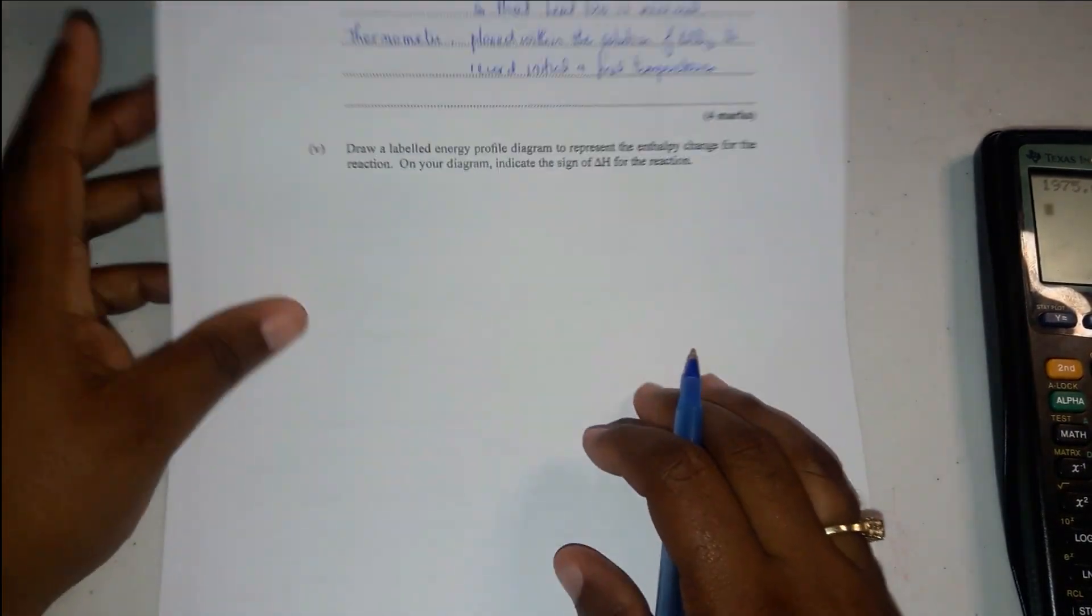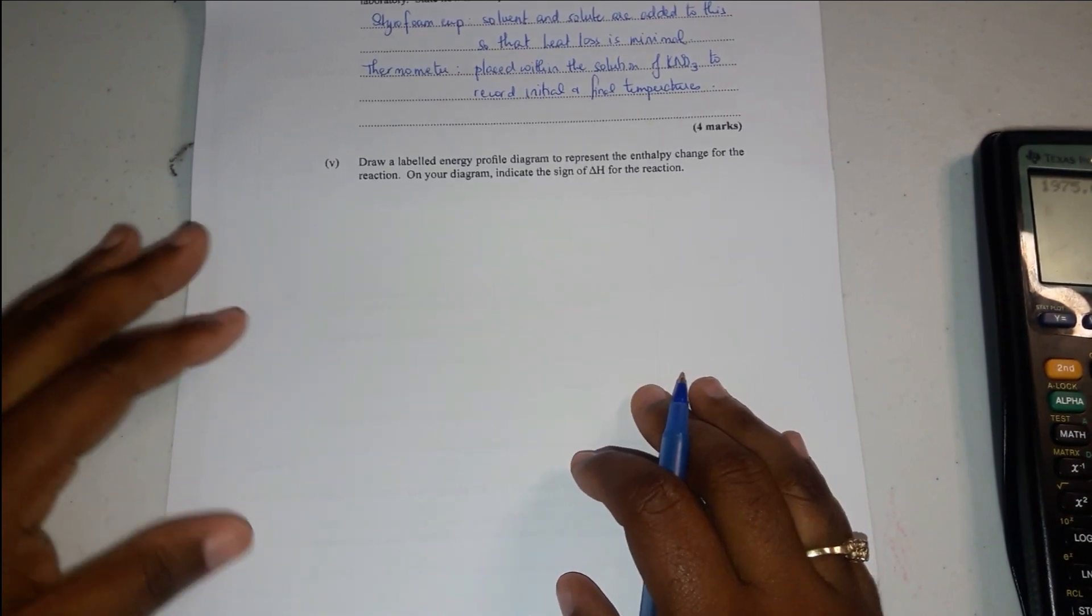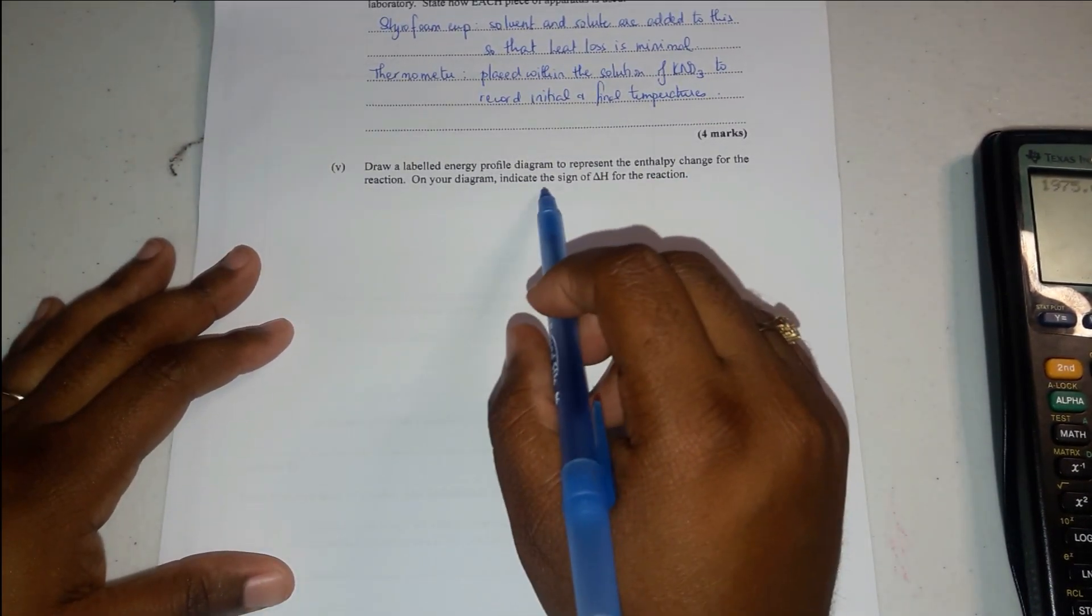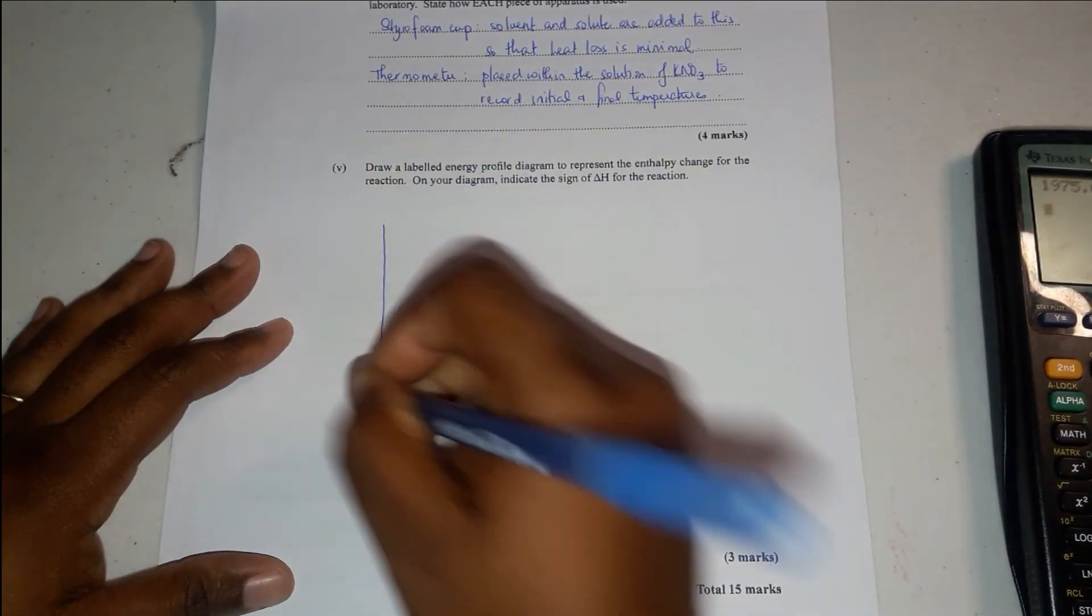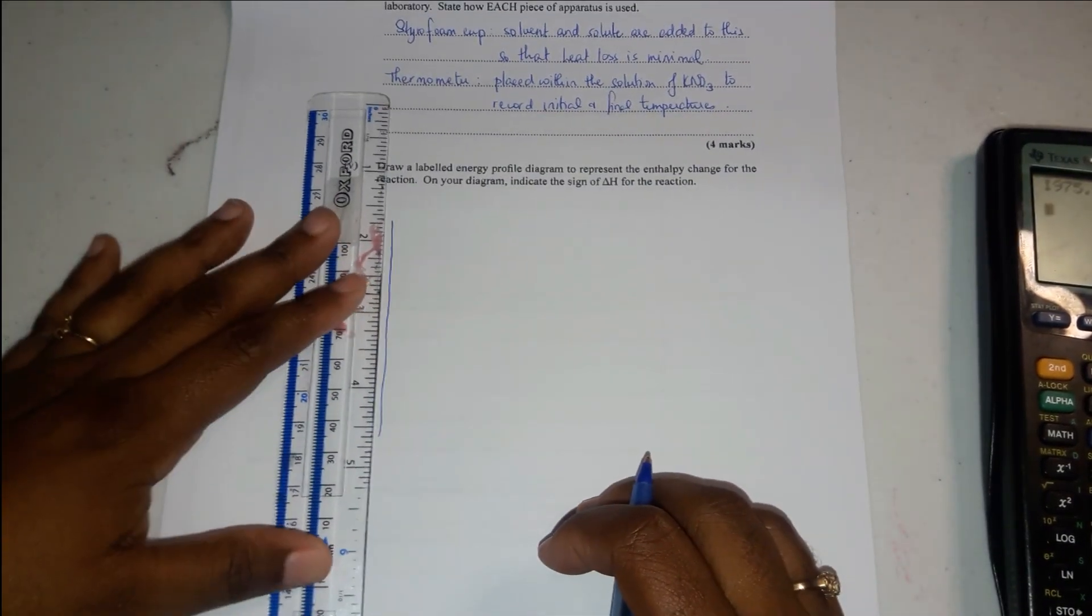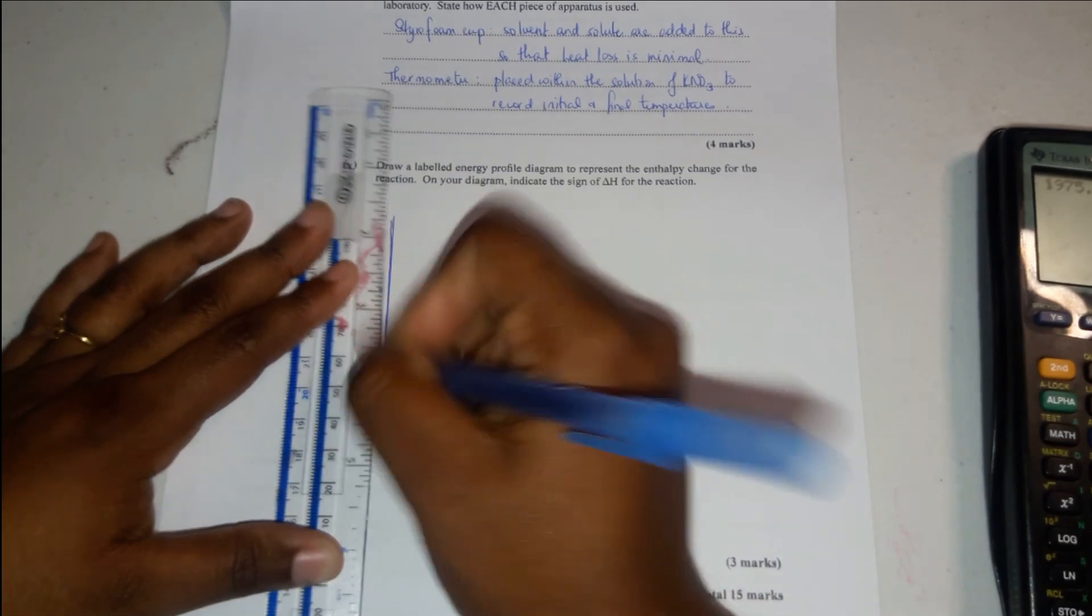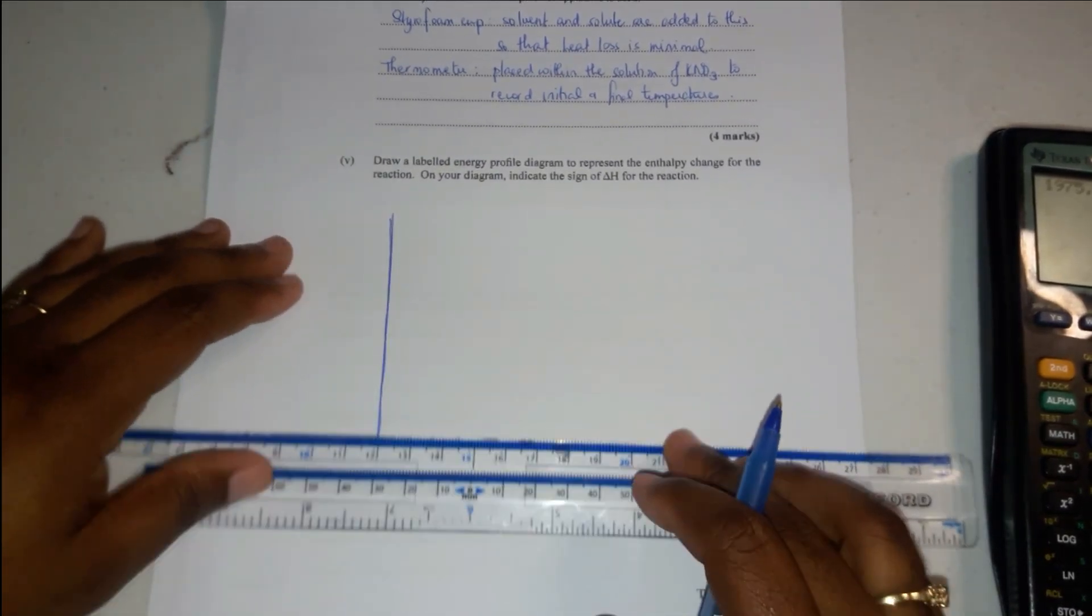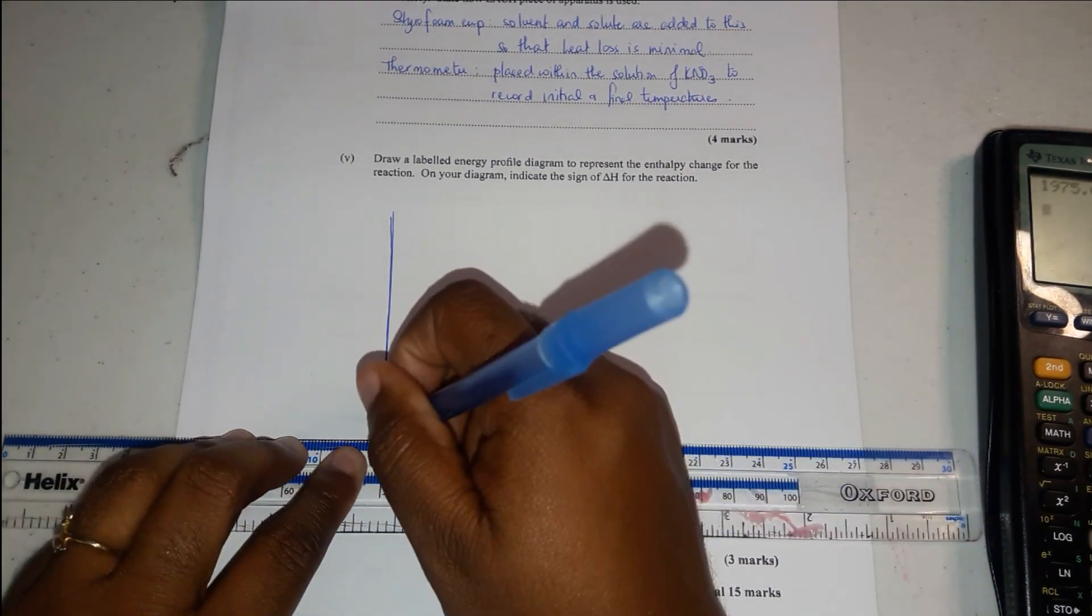It says draw a labeled energy profile diagram to represent the enthalpy change for the reaction and indicate the sign of delta H. I am being bad, so use a ruler when you are in the exam. Try to be as neat as possible. Don't do what I just did. Use a ruler so it looks good.